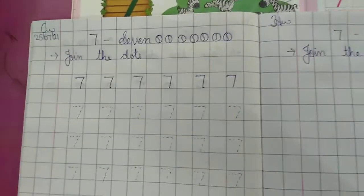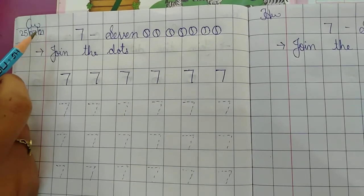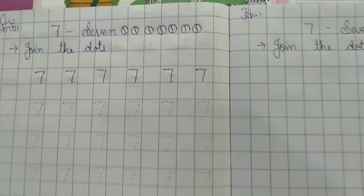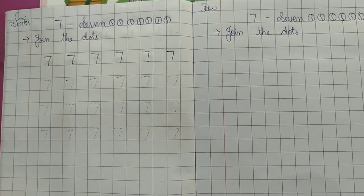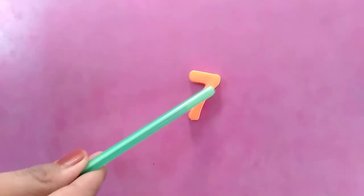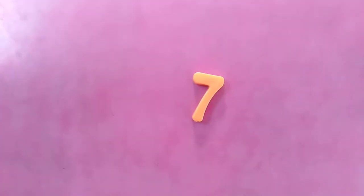Parents aapko is tarah se book ready karni hai. Classwork 25/7/21. Notebook me bhi yehi date aapko likhni hai. Classwork ka page and homework ka page. Dono page pe full dots dene hai aapko. Which number is this? Seven. Slipping line, slanting line. Number 7.